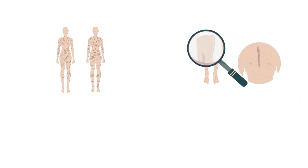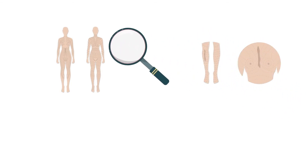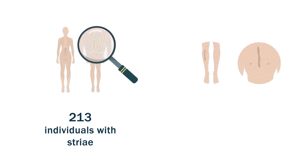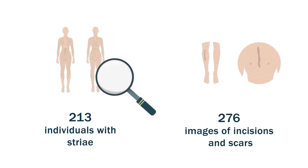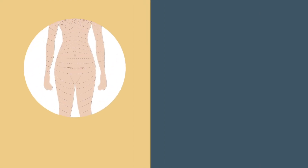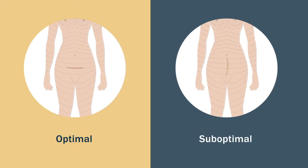The researchers assessed the direction of a scar with that of the stria-derived folding lines by comparing photographs of 213 individuals with stria, with 276 images of incisions and scars. Incisions were judged to be optimal when they were made within the main folding line, or suboptimal when the resulting scar was hypertrophic.